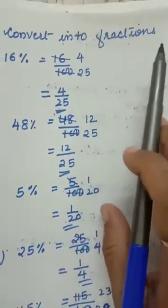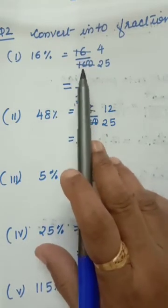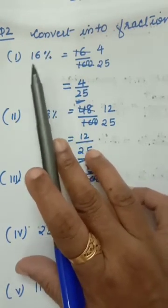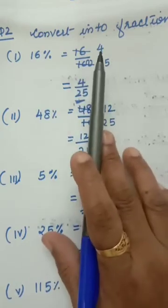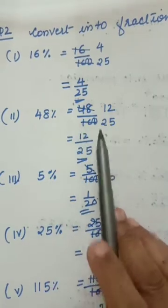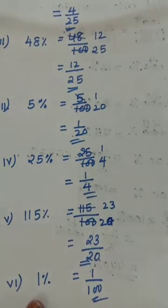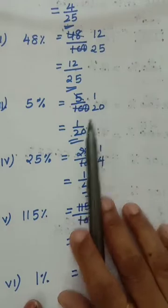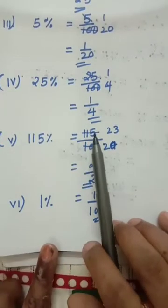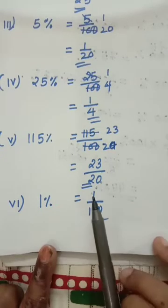Question number 2: convert into fractions. Given in percentage, you have to convert into fraction — numerator and denominator. 16 percentage means divided by 100. After cutting you get 4 by 25. 48 percentage means divided by 100 — cut it, you get 12 by 25. 5 percentage: 5 by 100 gives 1 by 20. 25 percentage: 25 by 100 gives 1 by 4. 115 percentage: 115 divided by 100 — cut out, you get 23 by 20. 1 percentage: 1 by 100.